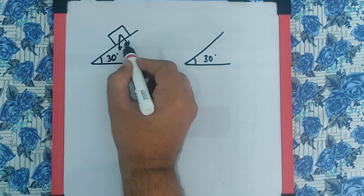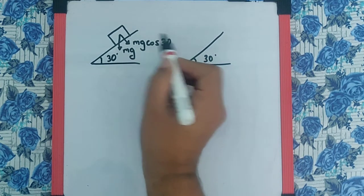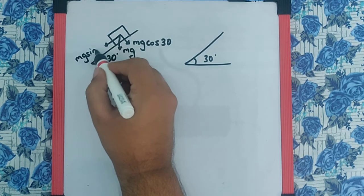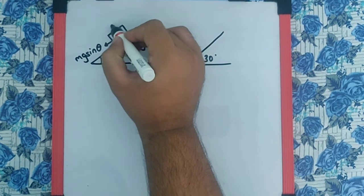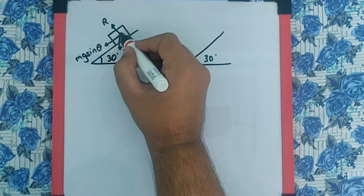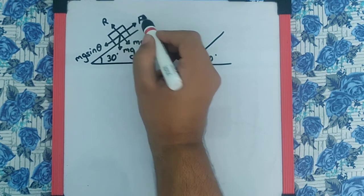Which can be resolved into two components as mg cos θ and mg sin θ. The normal reaction will be on this side R, and the force which is required to take it up is F like this.